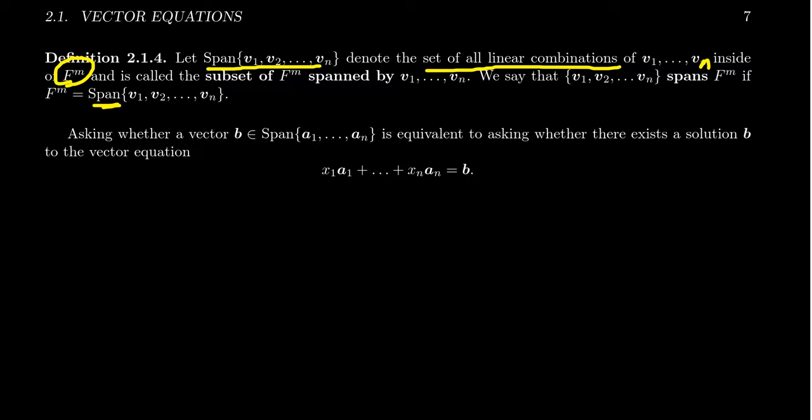This is denoted as the span of these things. And this idea of span is going to be very important in the future, in which case we'll talk a lot about the geometric consequences of what we mean by span. But for the moment, just accept that the span is the set of linear combinations.